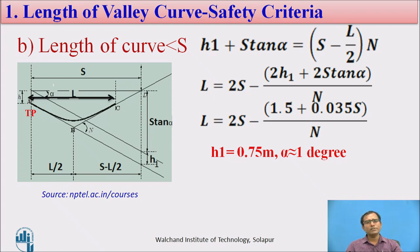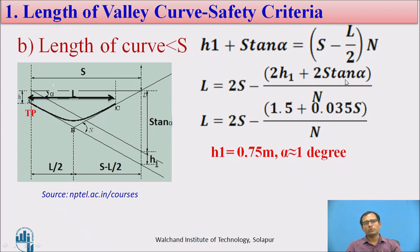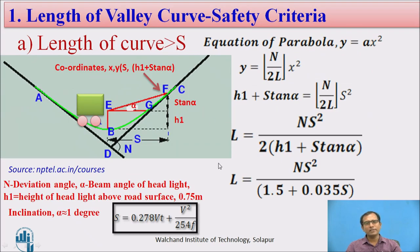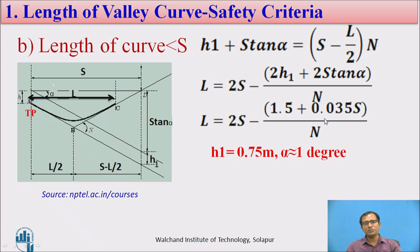For the second case, when the length of the curve L is less than S, considering the vehicle starting at the tangent point of the valley curve, using the geometry of the figure: h1 + S·tan(alpha) = (S − L/2)·N. Rearranging gives L = 2S − (2h1 + 2·tan(alpha)·S)/N. Substituting h1 = 0.75 m and alpha = 1°, the equation reduces to L = 2S − (1.5 + 0.035S)/N. In practice, first assume L > S to calculate the length; if the result satisfies L > S, adopt that length. If not, use the L < S equation.